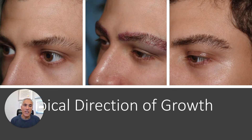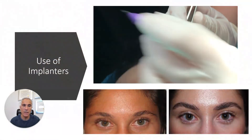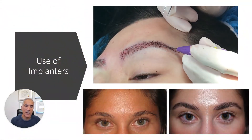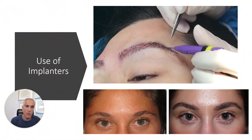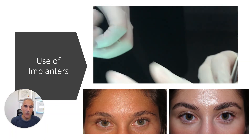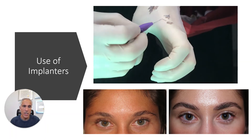For the occasional patient, you need to vary the direction that would normally be made for the recipient sites. Here's an example of how the hairs grow primarily vertically. To plant the grafts, I'm mostly using two-hair grafts, and we use implanter pens. You can see the before and after result in a typical case.